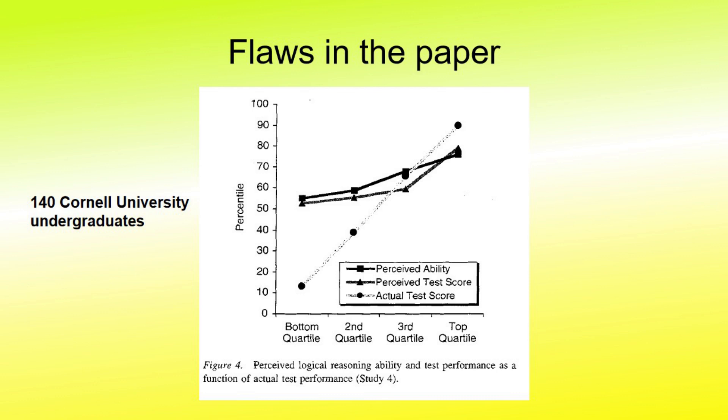This one has a larger group at 140 Cornell University undergraduate students. But yet, because they are all undergraduate students at the same university, it still means that the sample is not really representative.